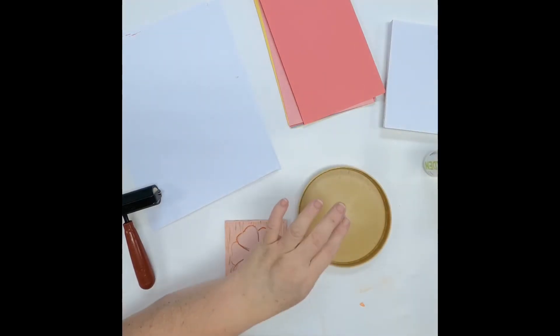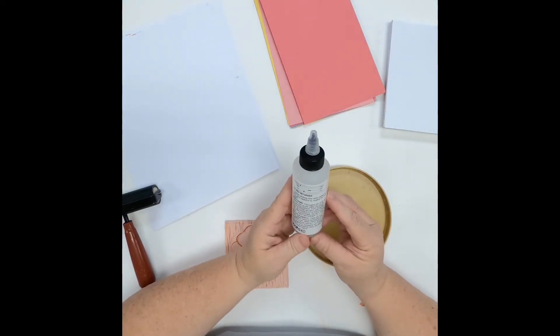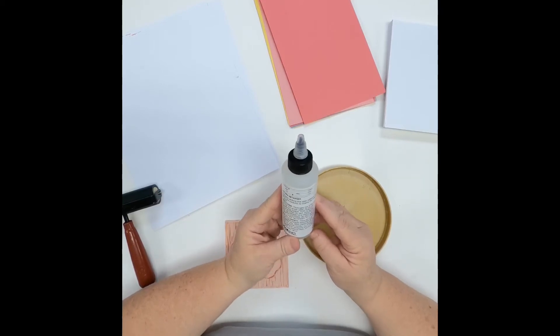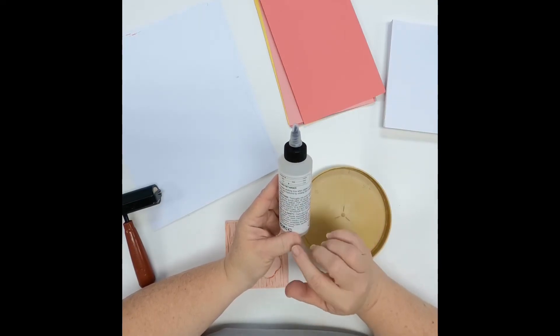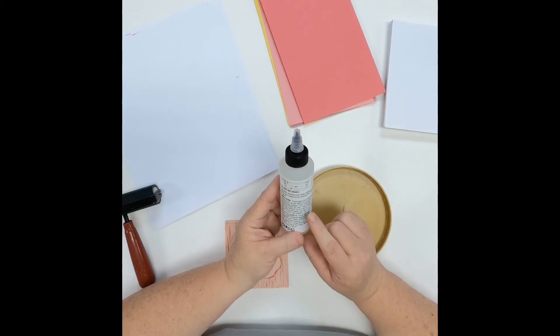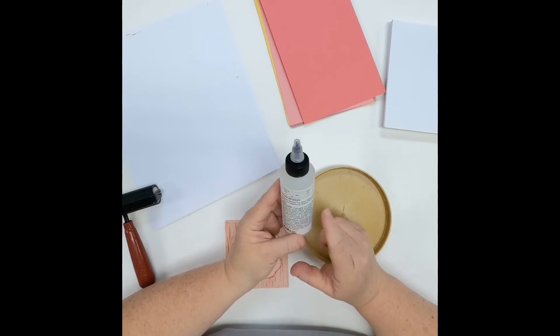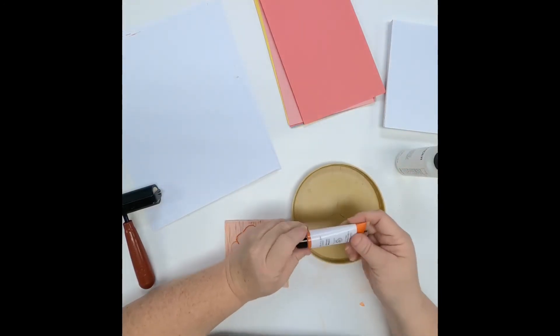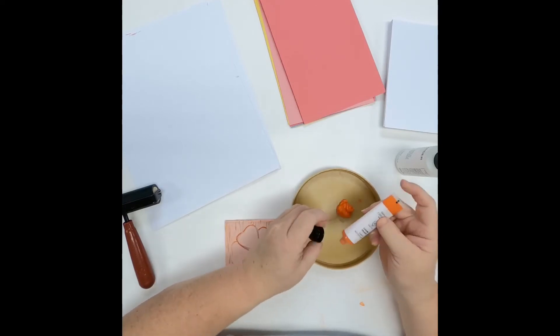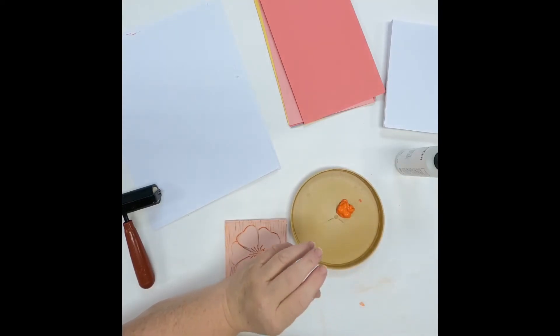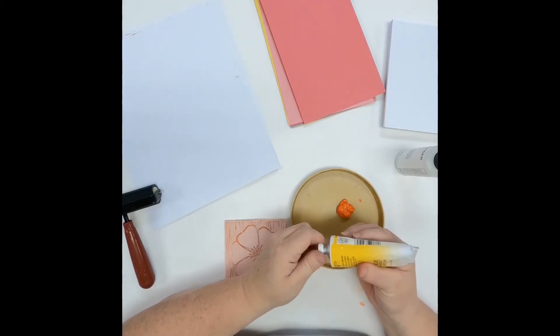So what it says on the instructions, which I highly recommend reading the instructions, it says for thicker applications, do not add more than one part retarder to one part paint. I, of course, had to test this so that I knew it would go okay for the video. So here's what I did: eight parts paint to one part retarder and I'm going to mix a color here. I would like kind of a warm yellowy orange. So what I'm doing is mixing my color and then I'm going to add the retarder.